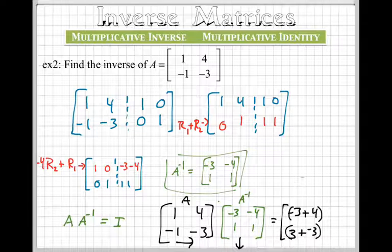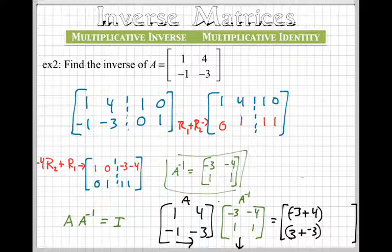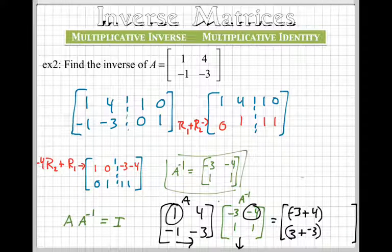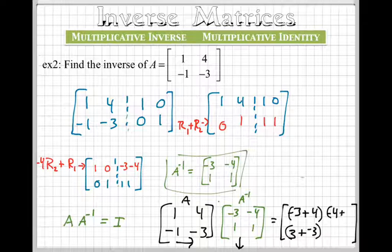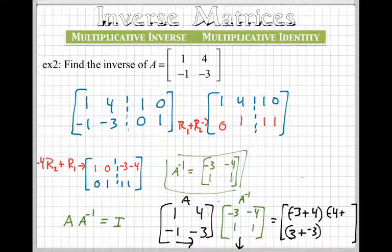And then the other part of my matrix, I go 1 times negative 4, second column, plus 4 times 1, which is 4.